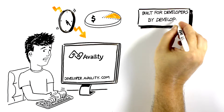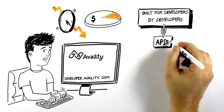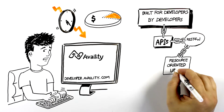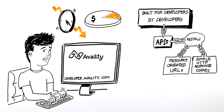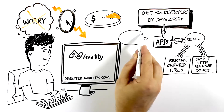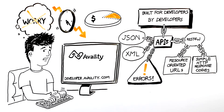Built for developers by developers, Availity APIs are easy to execute and designed using a RESTful approach of predictable, resource-oriented URLs and simple HTTP response codes with normalized data responses. So Josh doesn't have to worry about the business rules of connecting to the hundreds of health insurance companies — Availity does that for him. Availity REST APIs all return JSON and XML, including user-friendly error messages.